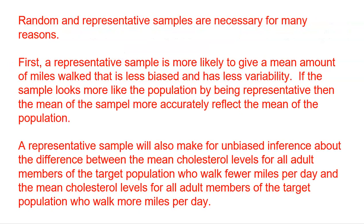Why is a representative sample necessary? A representative sample is more likely to give a mean amount of miles walked that is less biased and has less variability. If the sample mean looks more like the population by being representative, then the sample mean more accurately reflects the population mean. A representative sample will also make for unbiased inference about the difference between mean cholesterol levels for all adult members of the target population who walk fewer miles and those who walk more miles per day — which is exactly the comparison researchers want to make at the end of the study.